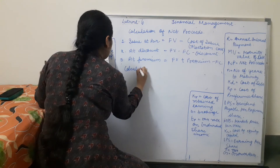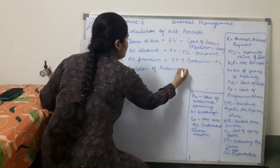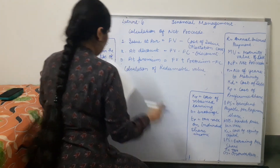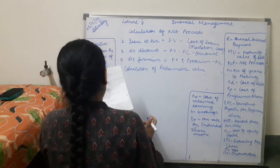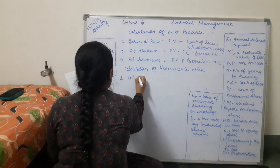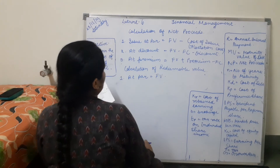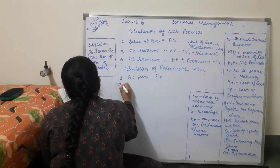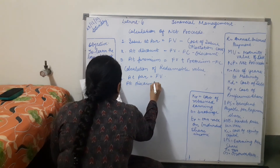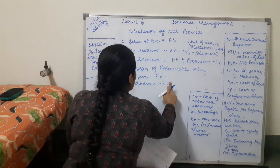Calculation of redeemable value. Point 1: At par, redeemable value is the fixed value. Point 2: At discount, redeemable value is fixed value plus or minus discount.